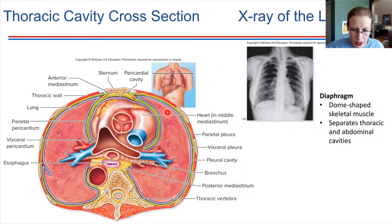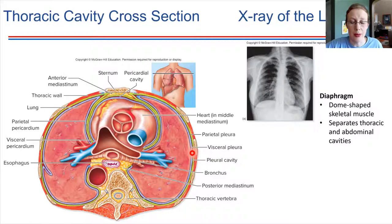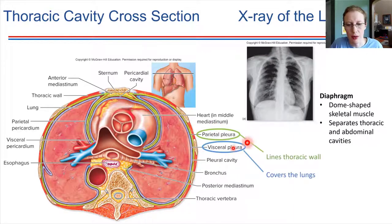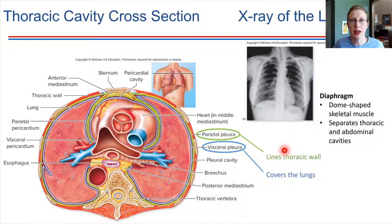There are two things I want to point out because they'll come up on the next slide. We've got two different pleura: the parietal pleura and the visceral pleura. The parietal pleura is a lining for the whole thoracic wall — it lines not just the lungs, but the whole thoracic wall, encloses that area, and separates it off from other body cavities.